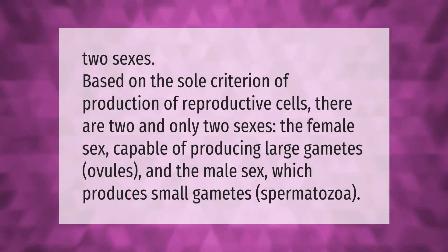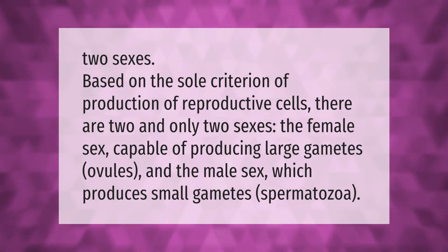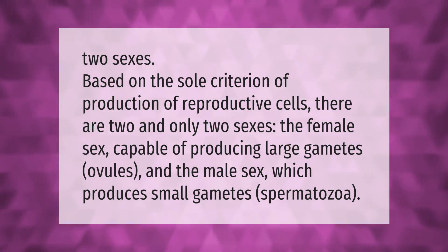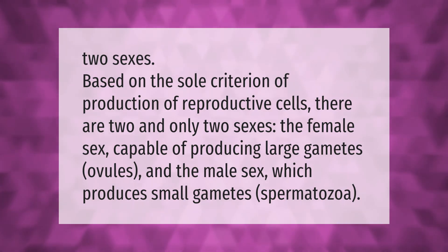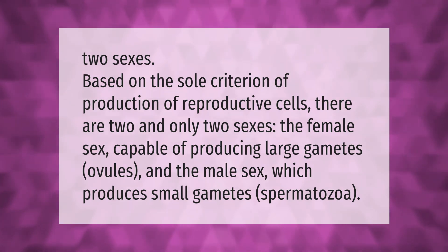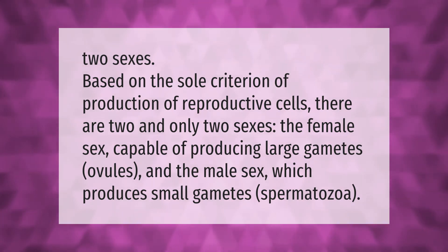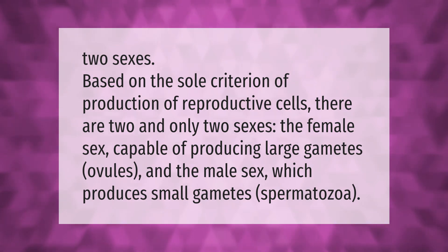Based on the sole criterion of production of reproductive cells, there are two and only two sexes: the female sex, capable of producing large gametes (ovules), and the male sex, which produces small gametes (spermatozoa).